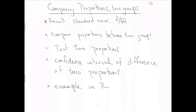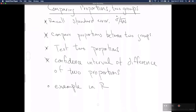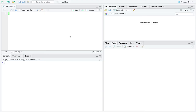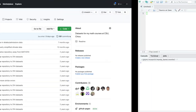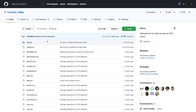We've set up the scenario and discussed testing and confidence intervals for two proportions in general. What's crucial next is to go through a concrete example in R. We're going to work with a dataset from my GitHub repository — the email dataset, which has 3,921 observations and 21 variables.